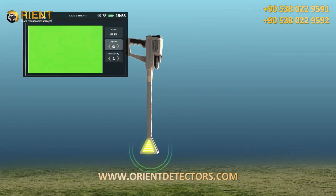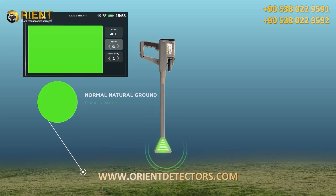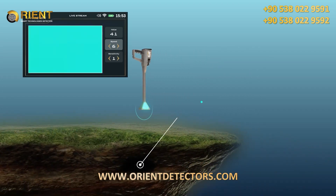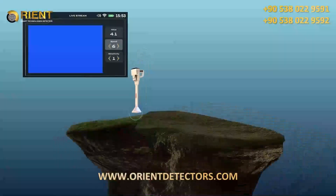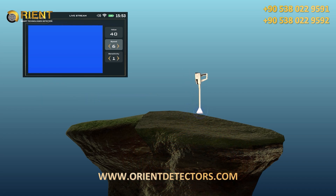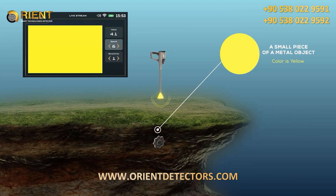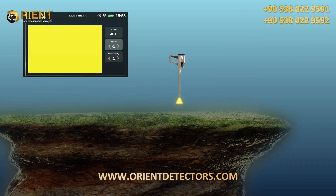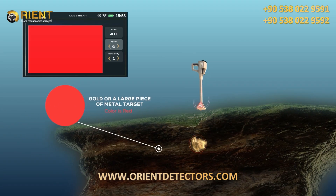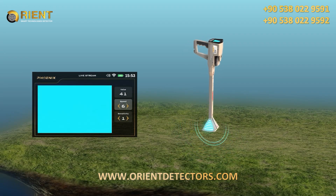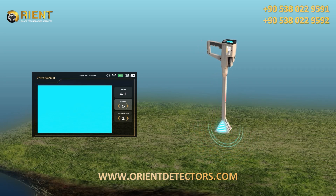The following describes the color connotations: Green indicates normal, natural ground. Light blue indicates a small space. Blue indicates a large void, like a tunnel. Yellow indicates a small piece of a metal object. Red indicates gold or a larger piece of a metal object. During the live stream, the LED lights on the head of the VST probe display the same color as the screen, making it easier for the user to focus on the scan process instead of looking at the screen.